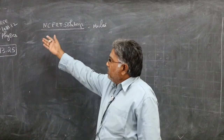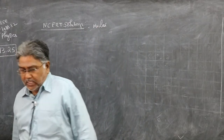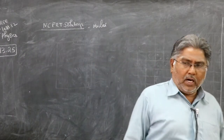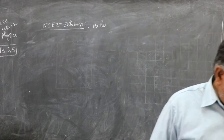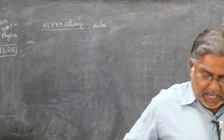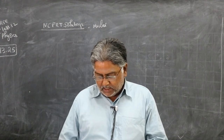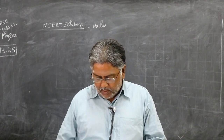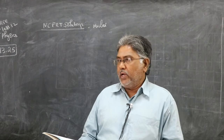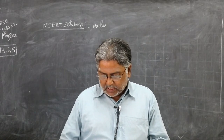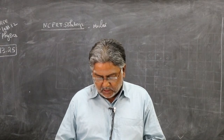Hello. CBSE Class 12 Physics, NCERT solutions from the chapter Nuclei, exercise number 13.25. The question is this: a source contains two phosphorous radionuclides — P-32 with a half-life of 14.3 days and P-33 with a half-life of 25.3 days. Initially, 10% of the decays come from P-33. How long must one wait until 90% do so?